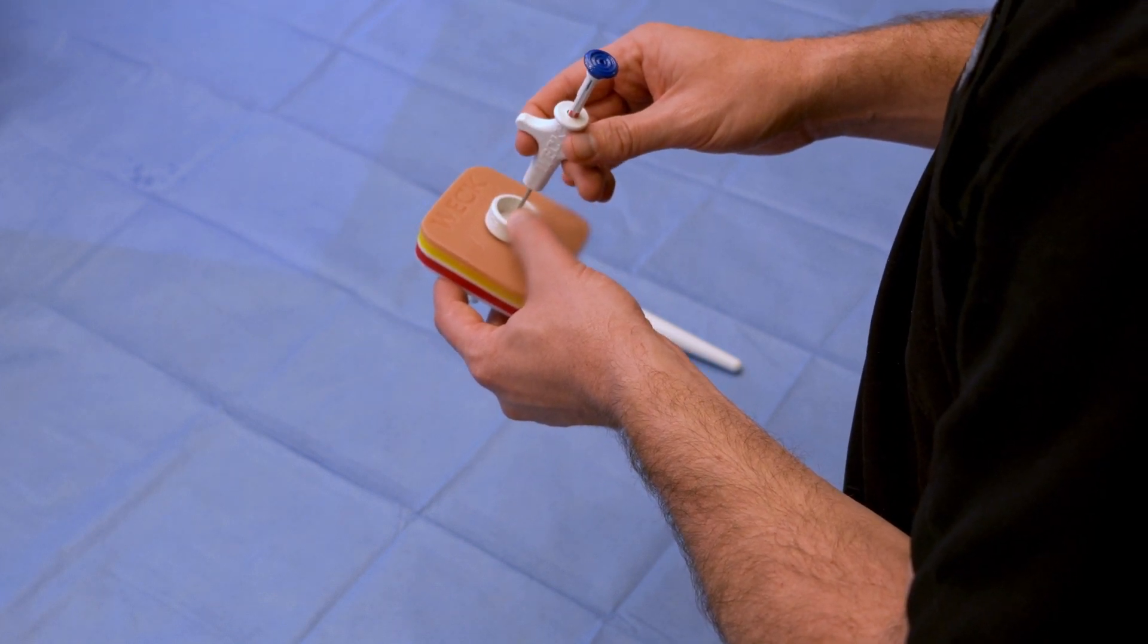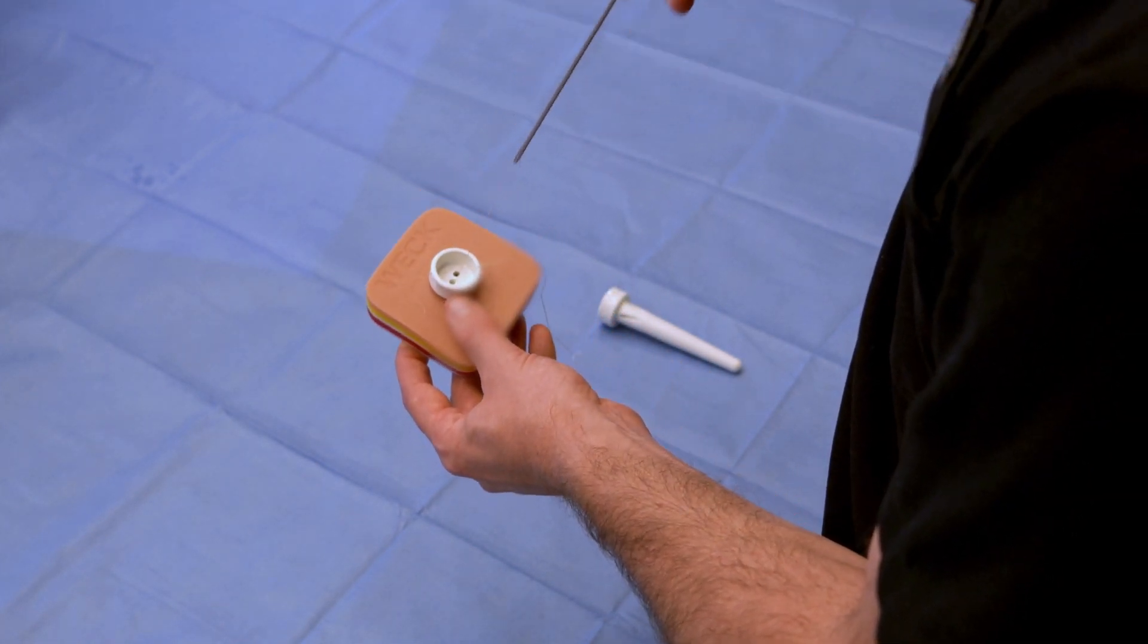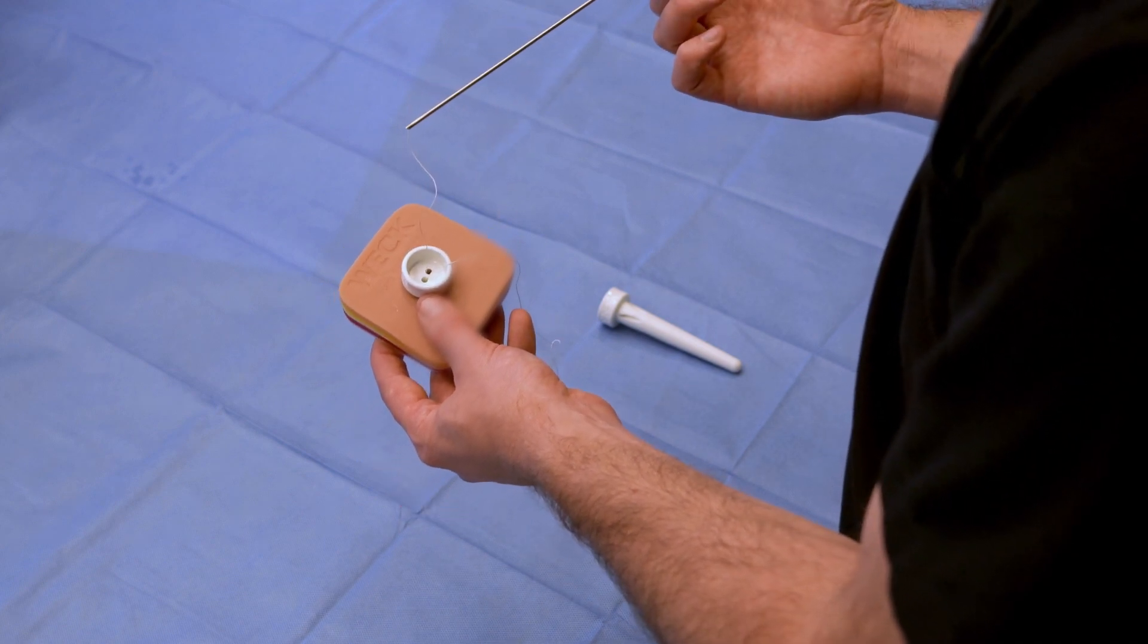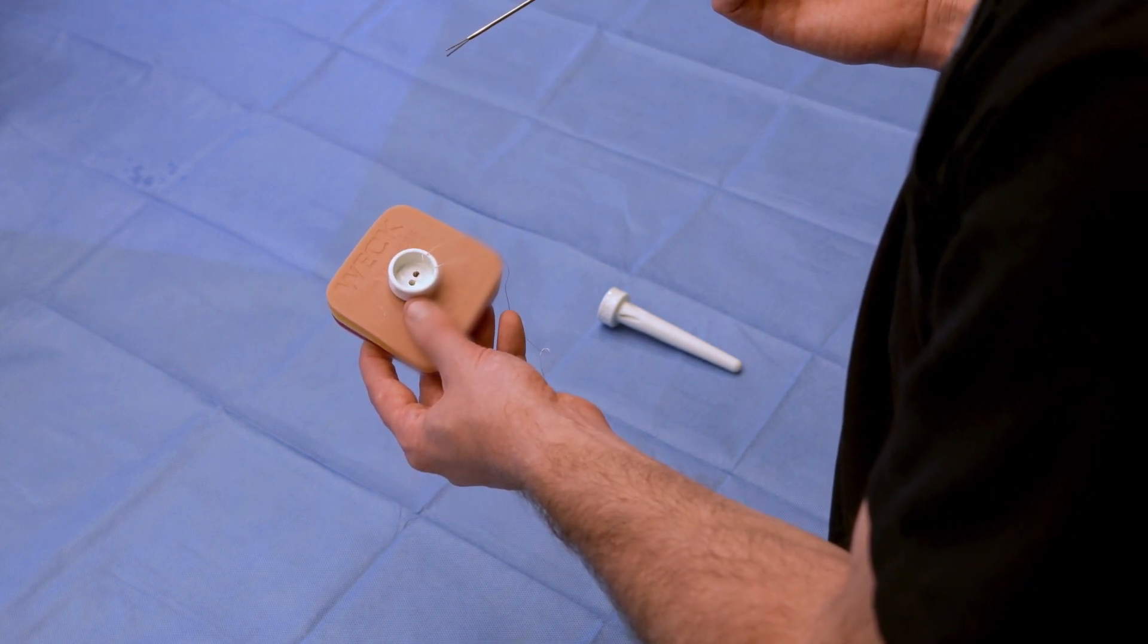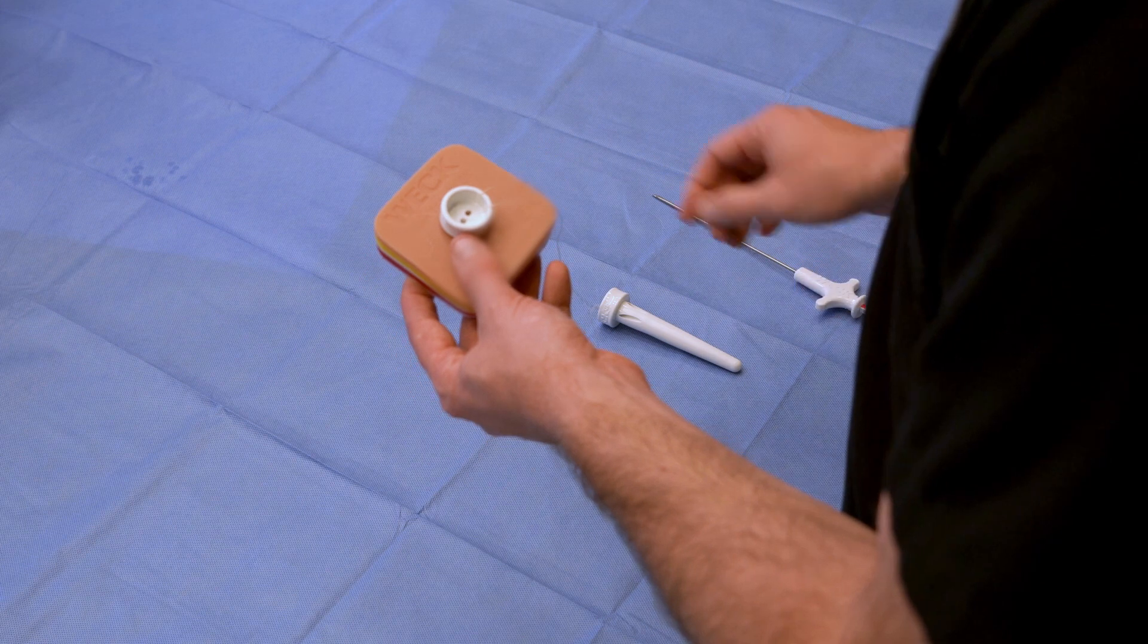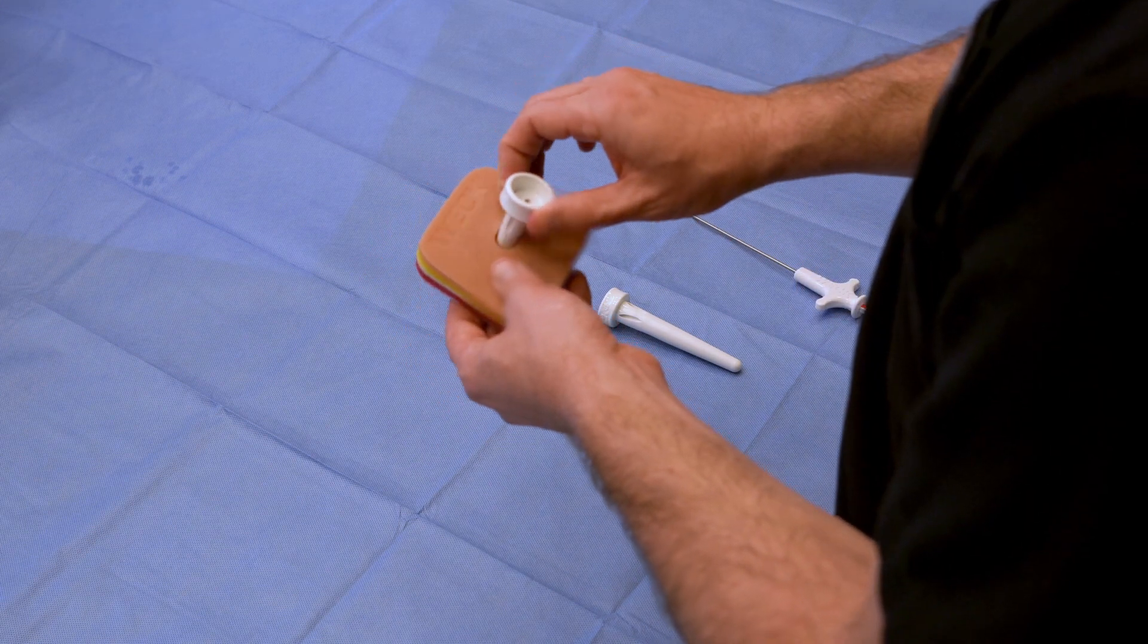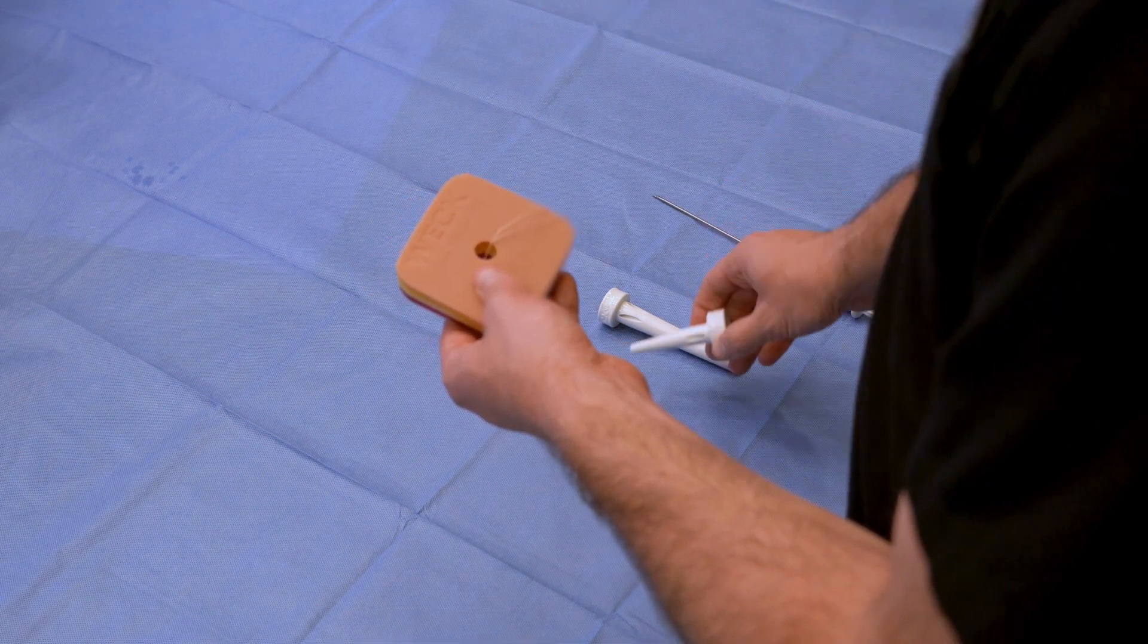Retract the suture passer through the pilot guide channel and press the button to release the suture. Once retracted, press the button one last time to release suture. Remove the pilot guide channel.